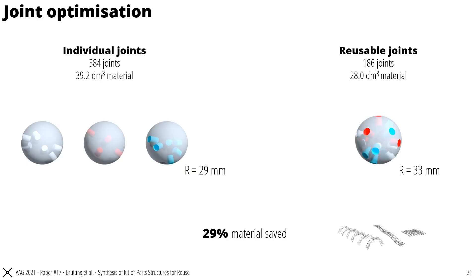Now, let's look into the joints of the three structures that we've seen before. The common way would be to produce one individual joint for each of the 384 nodes in all three structures. Because in this case, only a small number of holes needs to fit on the joint sphere surface, smaller joints with radius of 29 mm could be used. Instead, when we use our method to design reusable joints, we require a larger joint sphere radius of 33 mm to fit the hole patterns of up to three nodes into a bespoke joint. However, this reusability brings the advantage that we only need to produce 186 joints, and by that we save 29% of material compared to the one of fabrication of individual joints.